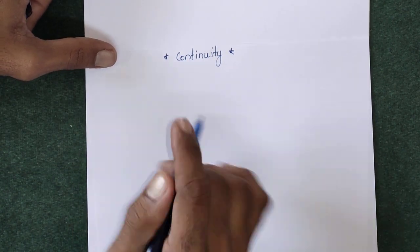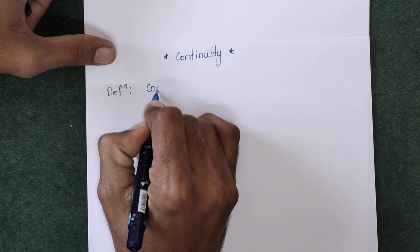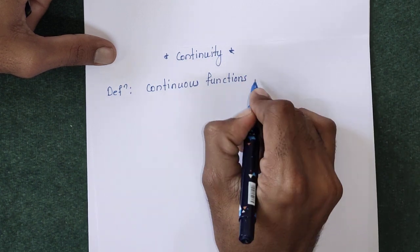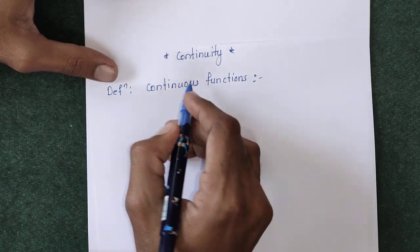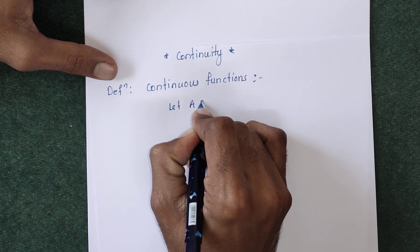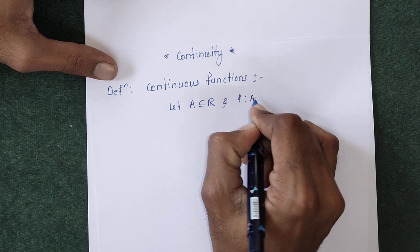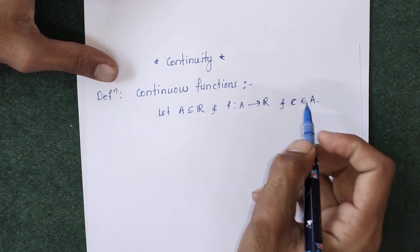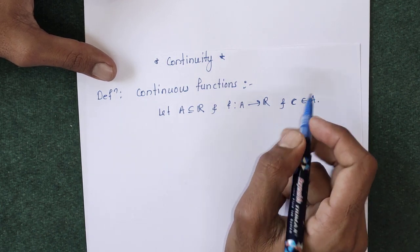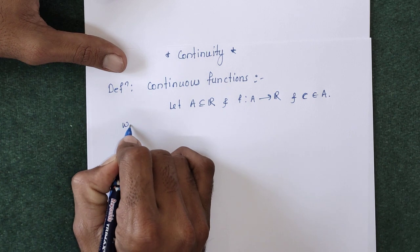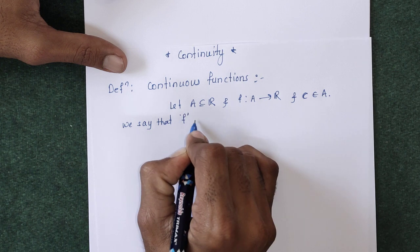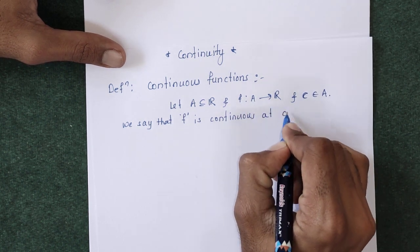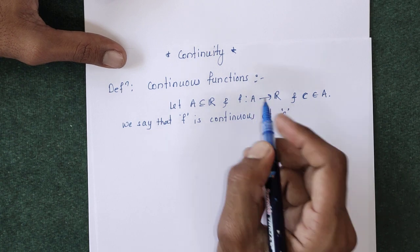The first definition in this chapter is the definition of continuous function. Let A be a subset of R, and suppose F from A to R is a function, and C belongs to A. Here C is any element of A — as we have seen in the previous chapter, C was our cluster point. Similarly, here C belongs to A, and we say that F is continuous at C, that is, the function is said to be continuous at some element C of domain A.